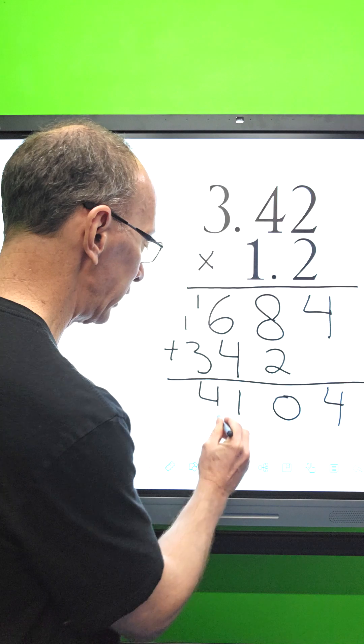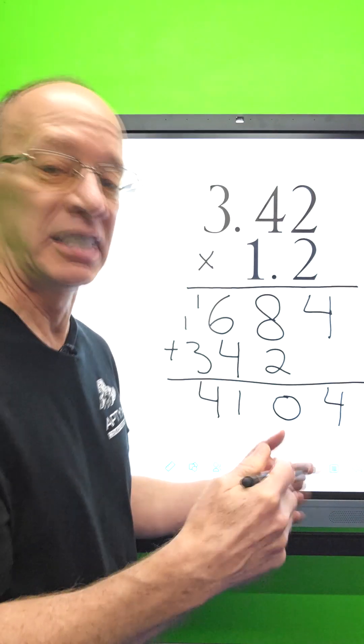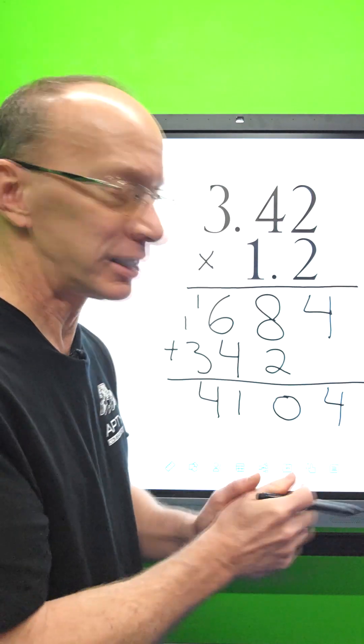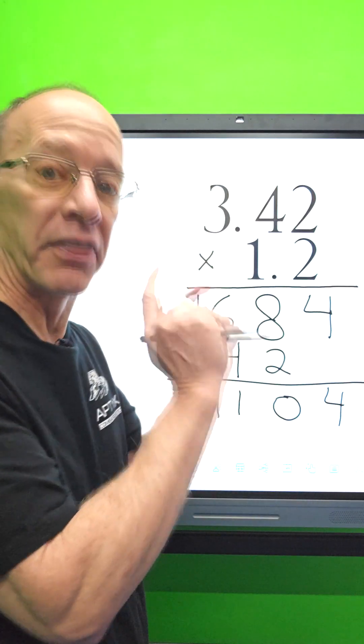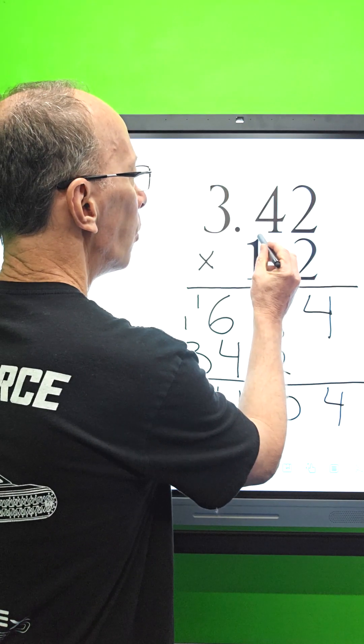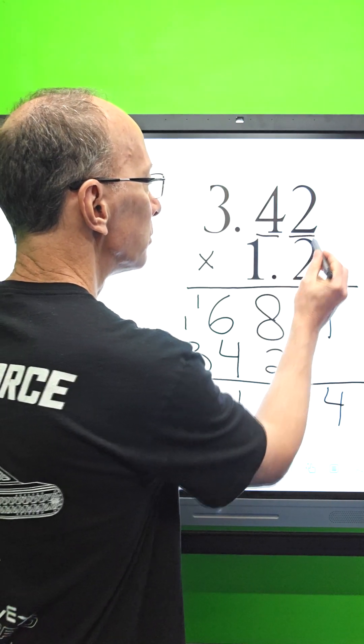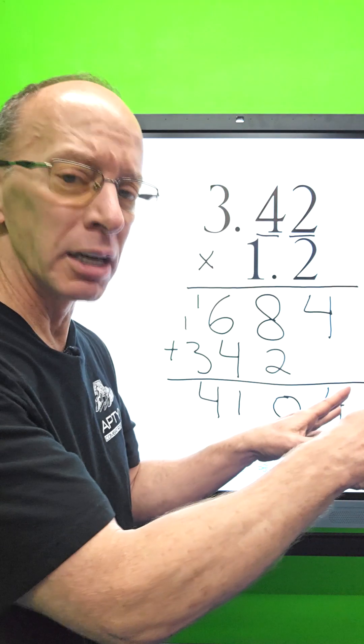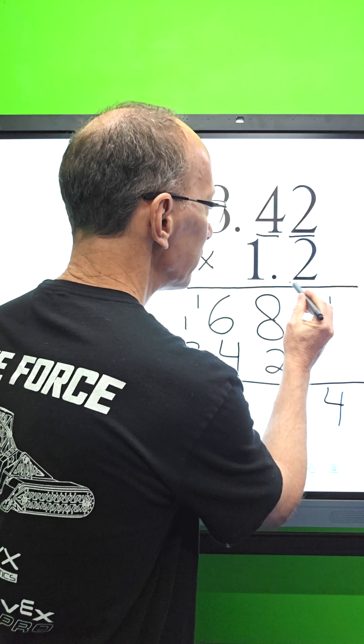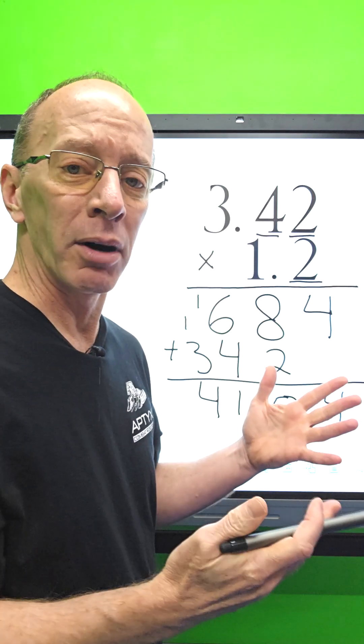Now we got to do decimals. Don't worry, you take it step by step. Now what you do is you count the numbers on that side of the decimal. All right, so I got one number here, two numbers here. Now don't forget about this two right here. We're gonna count all the numbers behind the decimals, so I have the two right here.